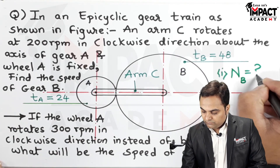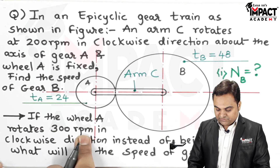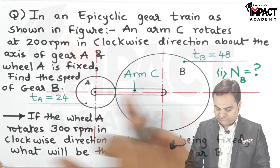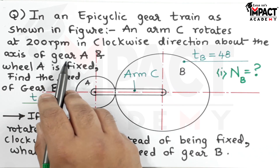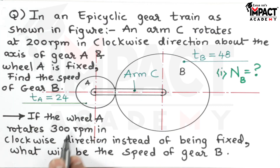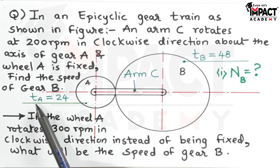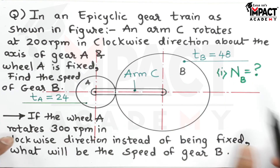We have to find the speed of gear B. There are two cases in this problem. In the first case we keep gear A as fixed, and in the second case gear A is given a speed of 300 RPM in the clockwise direction. Gear A has 24 teeth and gear B has 48 teeth. Let's get started with the solution.